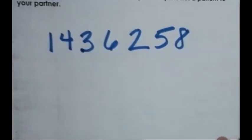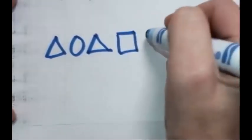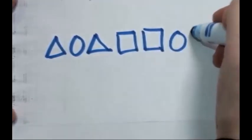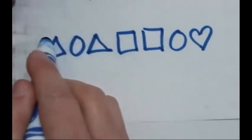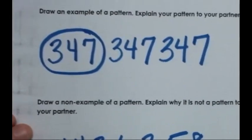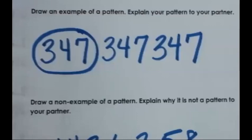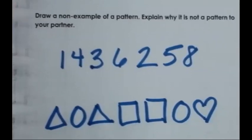Students can also draw non-examples with shapes — for instance: triangle, circle, triangle, square, square, circle, circle, heart — where nothing is repeating. Although triangle and circle started what could have been a core, that core does not repeat consistently. Having students give examples of patterns, identify the core, explain why it's a repeating pattern, and then extend their thinking to non-examples deepens their understanding of what makes a repeating pattern.